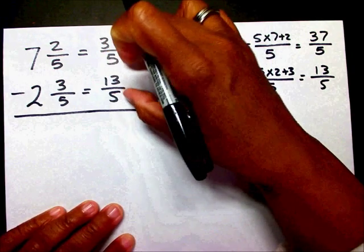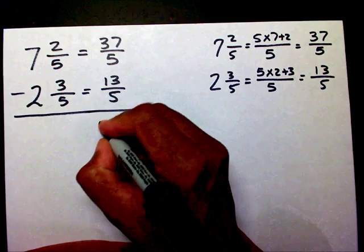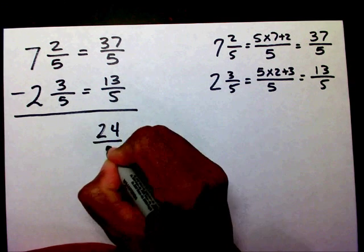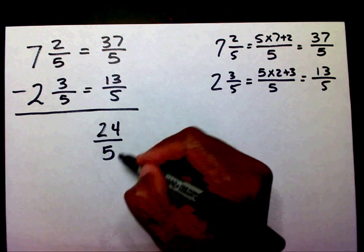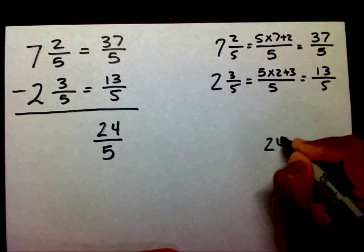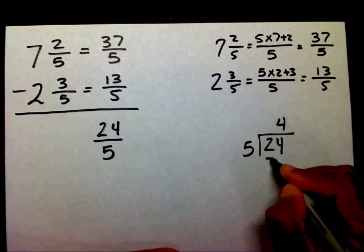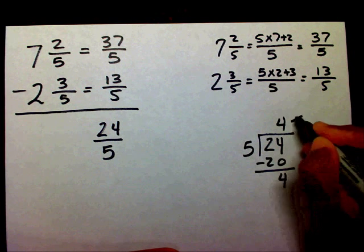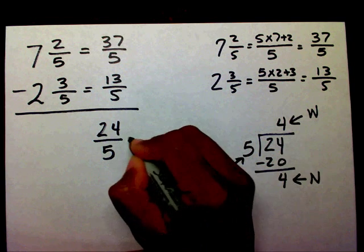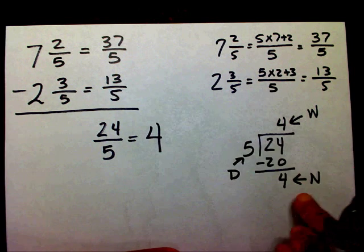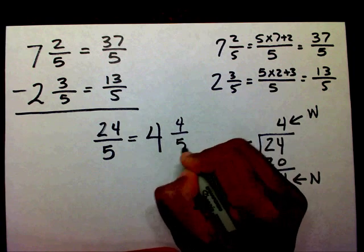Now that I have the same denominator, I can subtract. Thirty-seven minus thirteen is twenty-four, and I keep my same denominator. This is an improper fraction — I need to change this into a mixed number. Twenty-four divided by five: five will go into twenty-four four times with a remainder of four. So my whole number is four, my numerator is four, and my denominator is five. And this is in lowest terms.